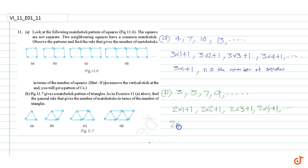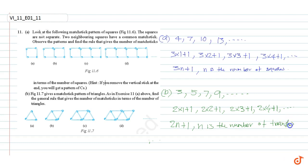...2n + 1, where n is the number of triangles. These are our answers: the pattern for Part A is 3n + 1, and the pattern for Part B is 2n + 1.